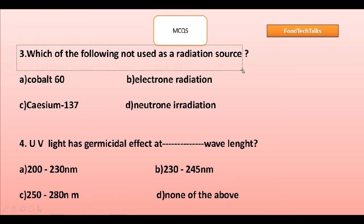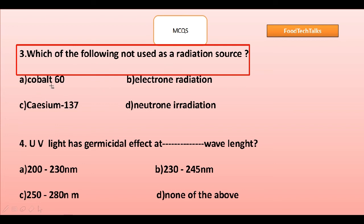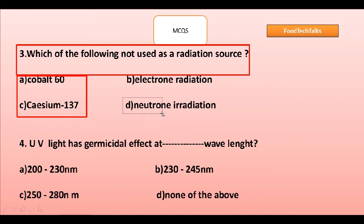Third question: which of the following is not used as a radiation source? Options are cobalt-60, electron radiation, cesium-137, or neutron radiation. Cobalt-60 and cesium-137 are sources of gamma radiation commonly used in food irradiation, and electron radiation can also be used. Option D, neutron radiation, is the right answer because neutrons have high penetrating power and would make food radioactive, so neutrons are not generally used as a radiation source.